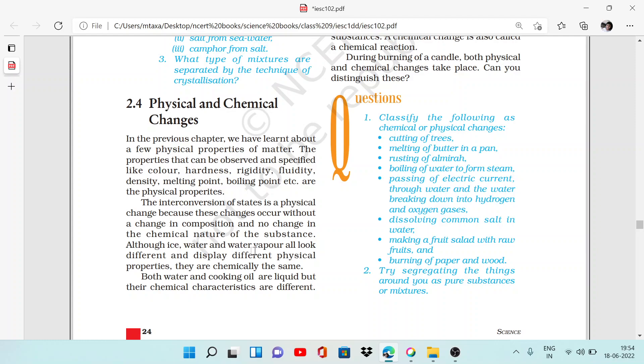Ice, water liquid, and water vapors—they all look different. Their physical properties are different. They display different physical properties, but chemically their nature is the same.